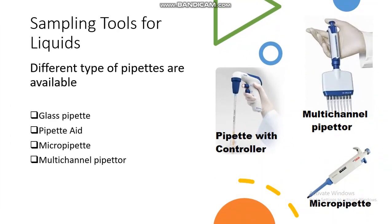We also have different types of pipettes available for sampling liquids, such as the glass pipette with a controller or pipette aid. The second type is the micropipette for small samples, and we can also use a multi-channel pipette.